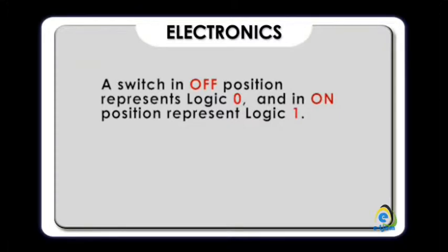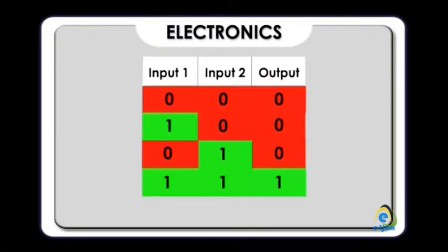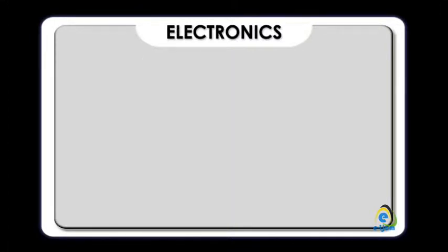A switch in the off position represents logic zero, and in the on position represents logic one. According to the results in the table, the circuit using two switches in series represents the same truth table as the AND gate.